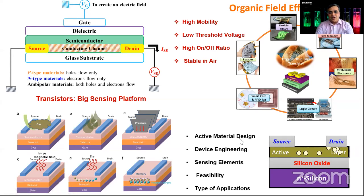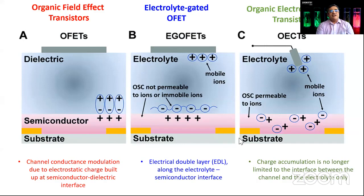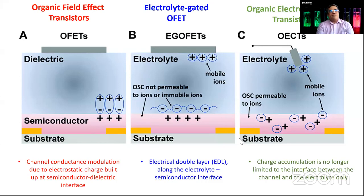The important aspects are active material design, device engineering, and the sensing element feasibility. In organic transistors, there are three subcategories: organic field effect transistors, electrolyte gated transistors, and organic electrochemical transistors. In the OFET, conductance is generated across the channel by electrostatic charge buildup at the semiconductor-dielectric interface under gate bias. For biosensing and biological applications, electrolyte gated and organic electrochemical transistors are preferred choices because the biological world involves polar analytes and electrolytes — ionic compounds polar by nature. In the electrolyte gated device, a double layer forms along the electrolyte-semiconductor interface.